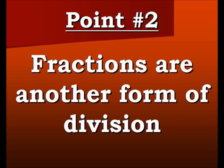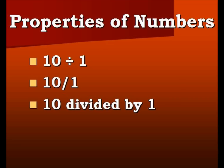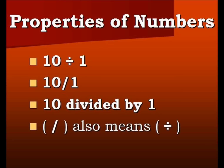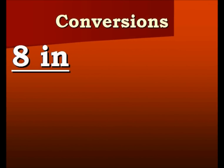Here are some examples: 10 divided by 1 means the same as 10 over 1 — they both mean 10 divided by 1. This forward slash or fraction bar also means division, so you'll see those as fractions or ratios. Moving back to our board, we have 8 inches times 1 over 1.